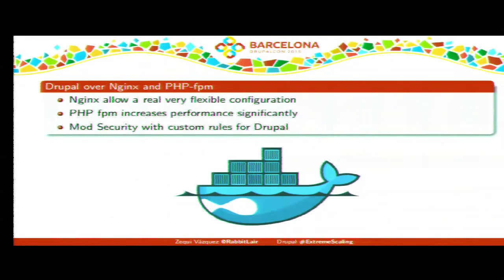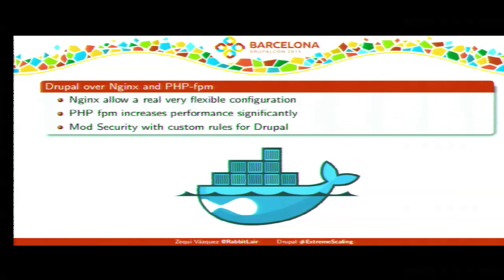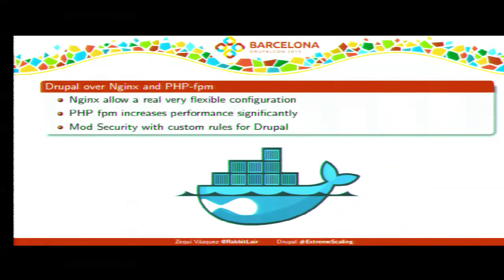I'll describe the stack from top to bottom, starting with the Drupal installation. We run Drupal over Nginx and PHP-FPM. Nginx gives very flexible configuration, and PHP-FPM increases performance significantly compared to mod_php on Apache. We also used ModSecurity to improve security and avoid basic attacks. We developed custom Ansible roles for Drupal, though I need to work on them a bit before releasing them.